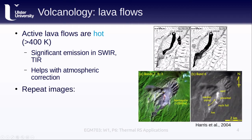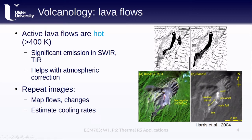In the example shown here from a paper by Harris and others, they used repeat Landsat ETM Plus images to help map lava flows at a volcano in Guatemala called Santiago Huito. Repeat thermal images can also help to estimate cooling rates, which helps us understand how these flows are changing over time.